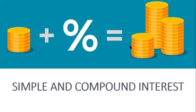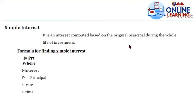First, let us define what simple interest is. Simple interest is an interest computed based on the original principal amount during the whole life of the investment. It is calculating how much interest is earned on money you invested or borrowed over a certain period of time, given an interest rate — for example, 3% or 4% per year from start to finish of the investment.